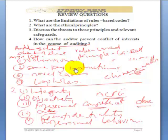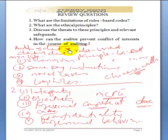Regarding a situation whereby the auditor's interest conflicts with the client's interest — the general rule is that the auditor should not accept an audit engagement where their interest is going to conflict with the client's interest. If the issue is not significant, the auditor must declare the position to those charged with governance of the client. But if it is a significant issue, the auditor must decline to accept such an engagement. So those are the four review questions in this section — with all these questions, we will have a very good picture of what we have covered so far.